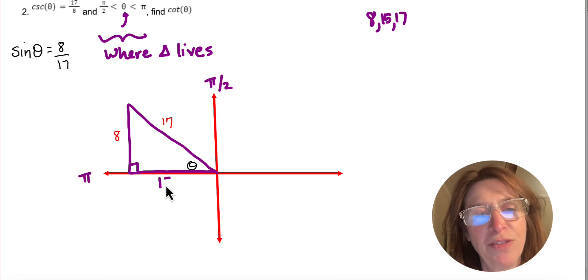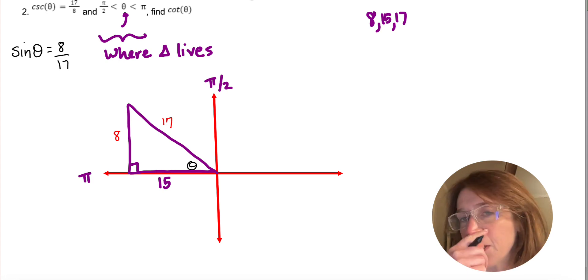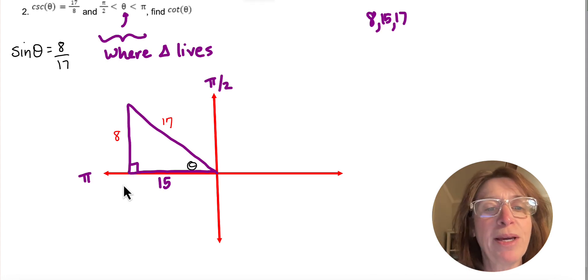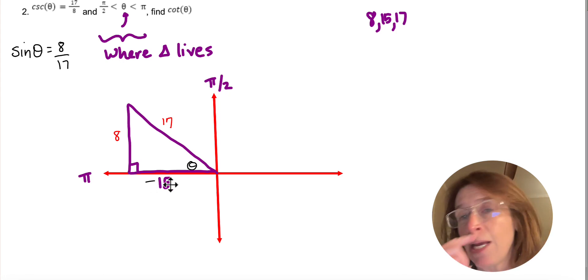So then this side would be 15. Now, you don't like to label sides of triangles negative, but because that x value in quadrant 2 is negative, I'm going to put a negative there to help me.